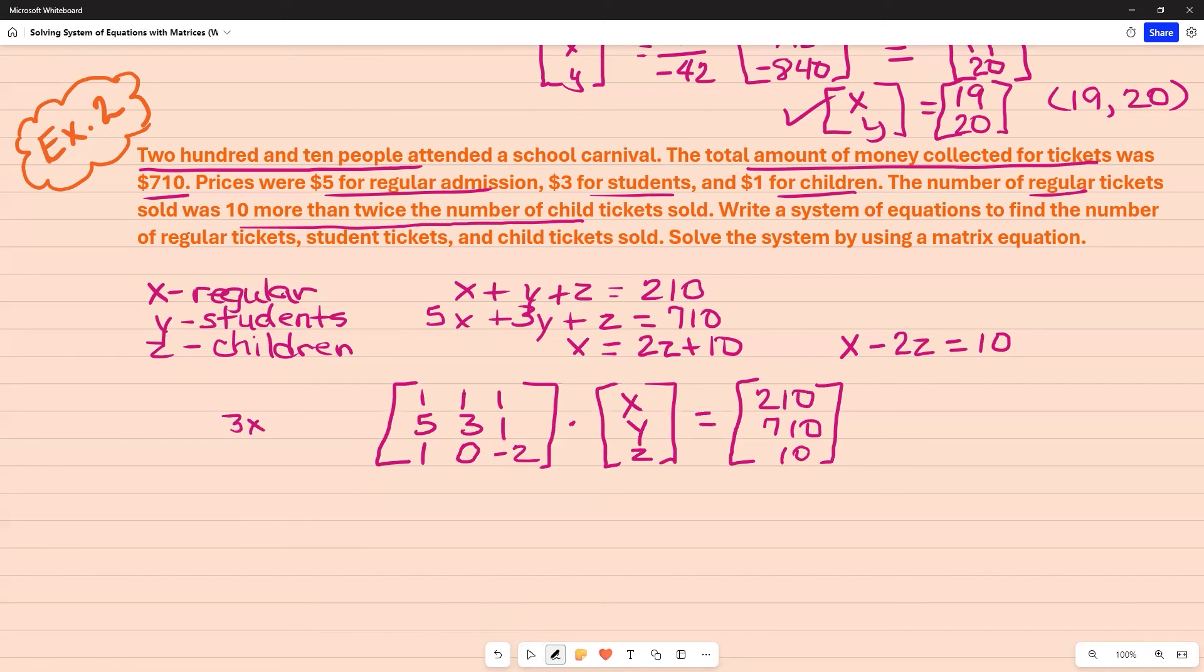So this is a 3 by 3. And I told you in class that you can use the calculator for this. But I still want to label it. This is A, X, and B. And I'm still doing the same thing. I'm multiplying times A inverse, which is going to create the identity matrix. And that's going to leave X by itself. And what I do to one side, I do to the other. I'm going to go ahead and bring this down as X, Y, Z.